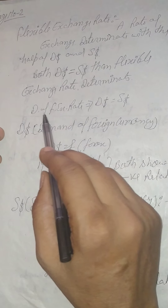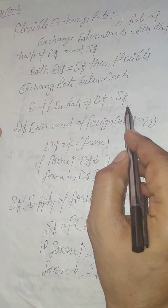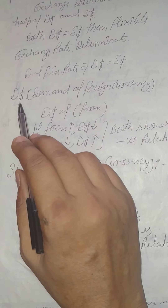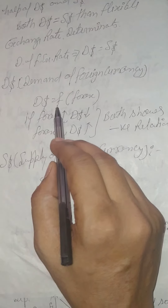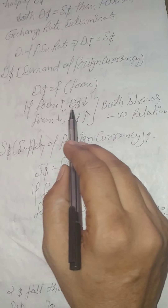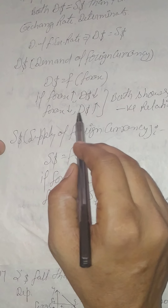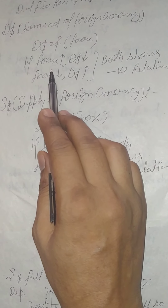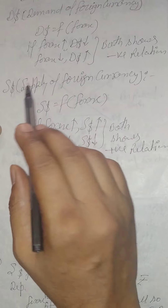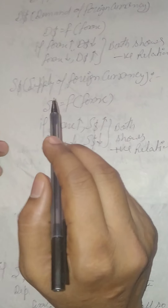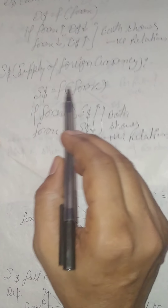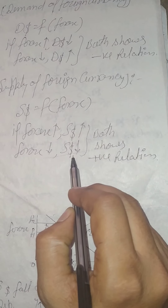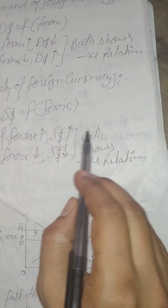When both demand of foreign currency and supply of foreign currency are equal to each other, then the flexible exchange rate is determined. The demand of foreign currency is a function of forex. If forex rises, demand of foreign currency falls; if forex falls, demand of foreign currency rises — so both have a negative relation. The supply of foreign currency is also a function of forex. When forex rises, supply of foreign currency rises; when forex falls, supply also falls — so forex and supply of foreign currency show a positive relation.